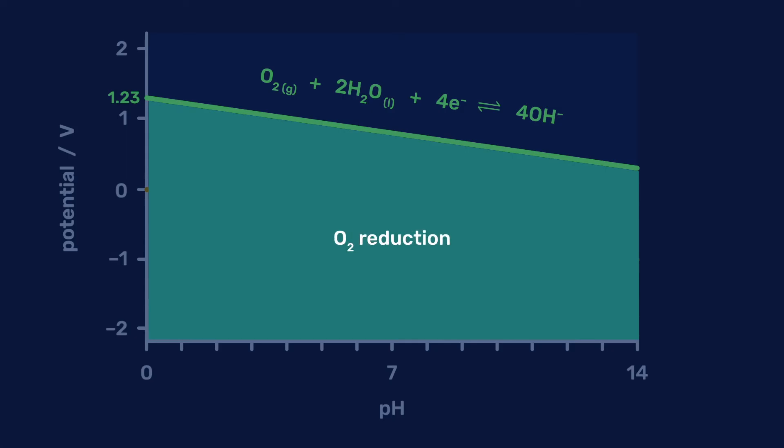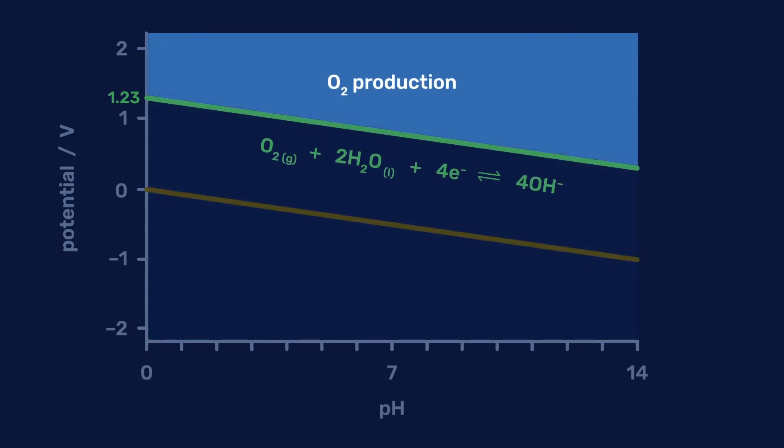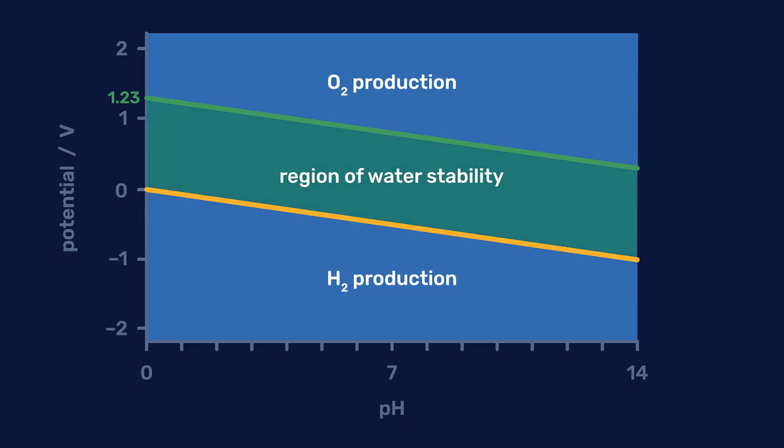In contrast, combinations of potentials and pH lying above it lead to the reverse reaction, producing oxygen gas from hydroxyl ions present in water. The zone in between hydrogen and oxygen production defines the region of water stability.